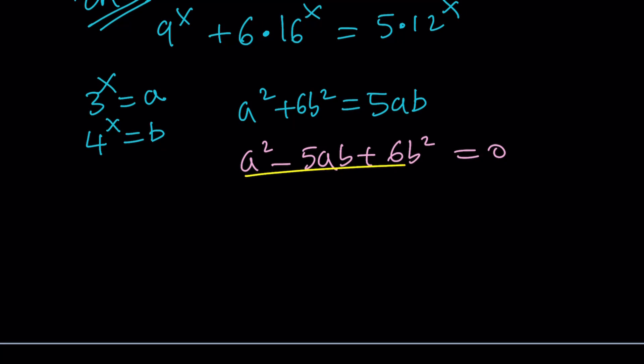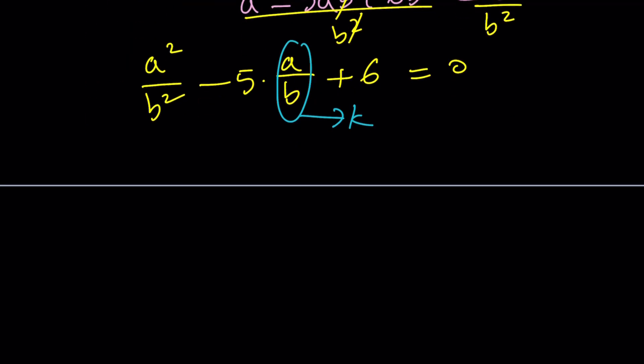Divide both sides by b squared. This is going to give you a squared over b squared plus 6 because b squared cancels out completely. 5 times a over b, and then this equals 0. Here's a good way to handle this. Call this another variable. How about k? k being like a ratio. We get k squared minus 5k plus 6 equals 0.